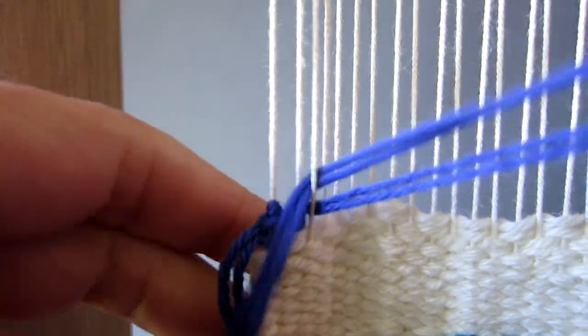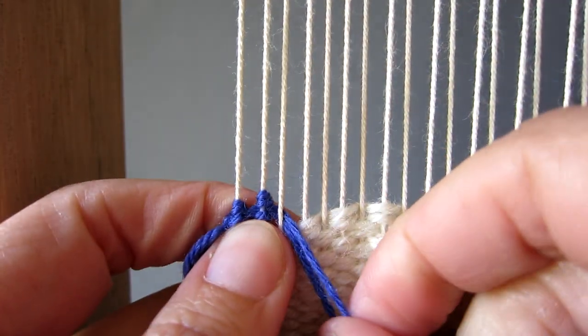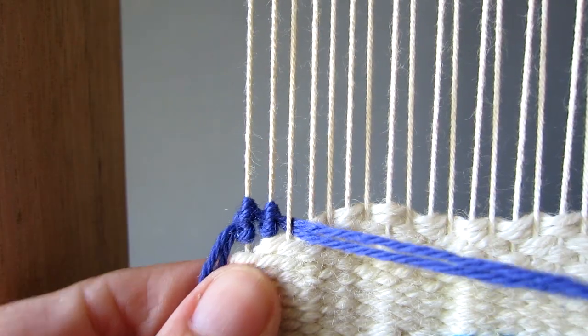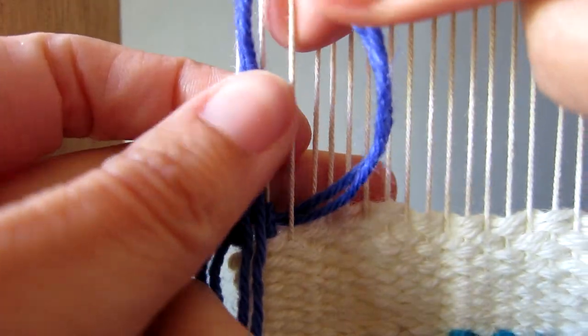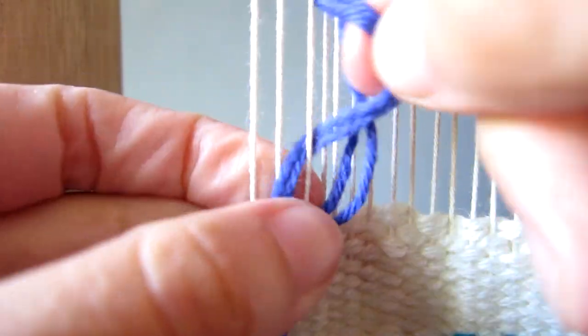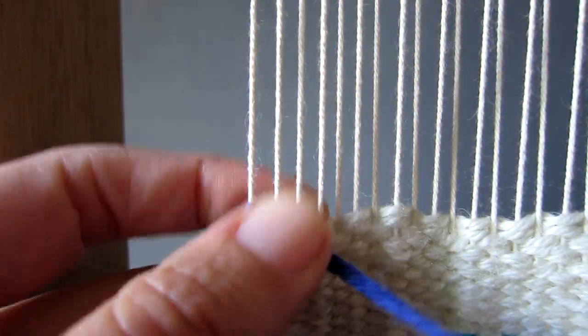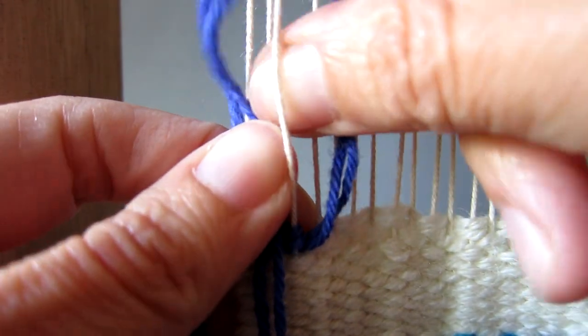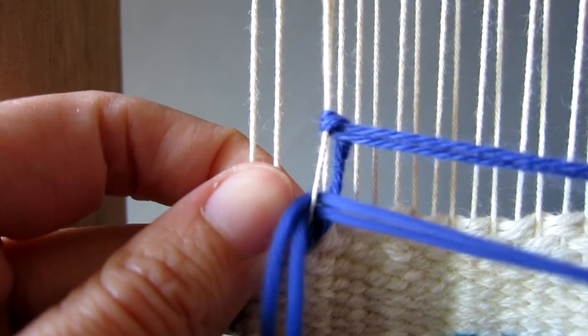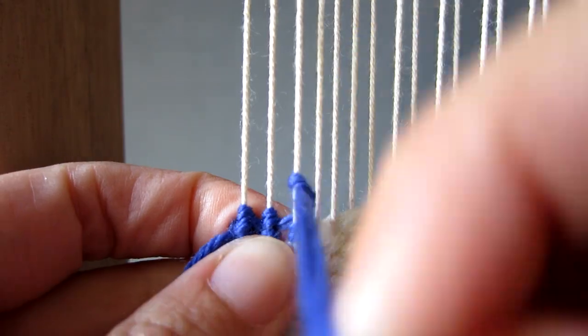As you work your way along the row, make sure the warp threads are not pulling in too much, especially when you are using these knots at the beginning of your weaving. When done properly these knots should hold your warp threads firmly in place as well as stopping the weft yarn from unraveling after you take your weaving off the loom.